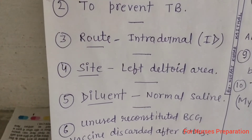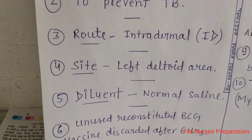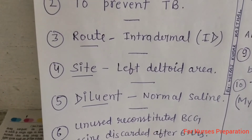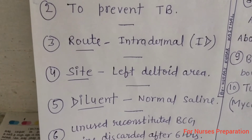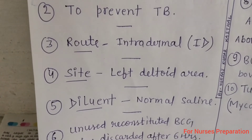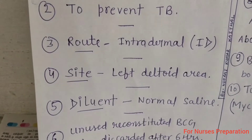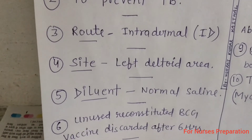Point number 5: To dilute the BCG vaccine, normal saline is used. With distilled water, BCG vaccine can cause irritation.